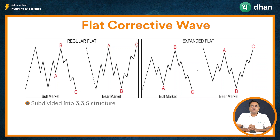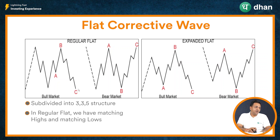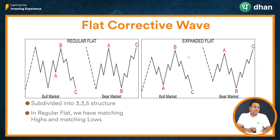This is a regular flat where the two ends of wave A and wave C are almost the same. In terms of the flat structure of the corrective wave, we have two broad formations: one is a regular flat and one is an expanded flat. In a regular flat, we have matching highs and matching lows across waves A, B, and C. Whereas in an expanded flat, we have a slightly higher point on wave number B and wave number C when compared to wave number A. This also subdivides into a 3-3-5 structure as covered in the regular flat.